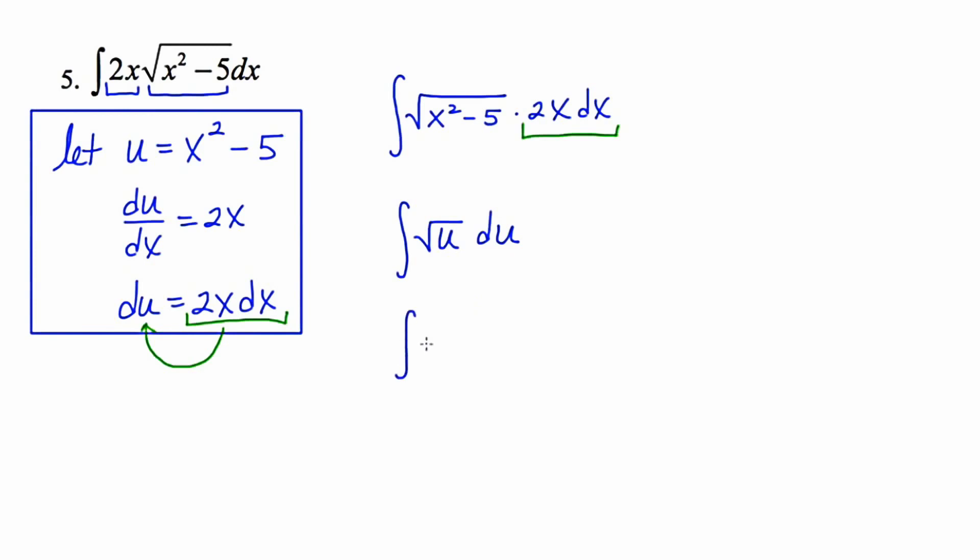My next maneuver will be to rewrite this using fractional exponents as u to the 1 half power. I'm now ready to take the antiderivative. I'll leave some space. Raise the power from 1 half to 3 halves. Multiply by the reciprocal, which would be 2 thirds. And then add on our arbitrary constant plus c. And my final step will be to back substitute and replace u for its originally stated expression, which in this case is x squared minus 5.